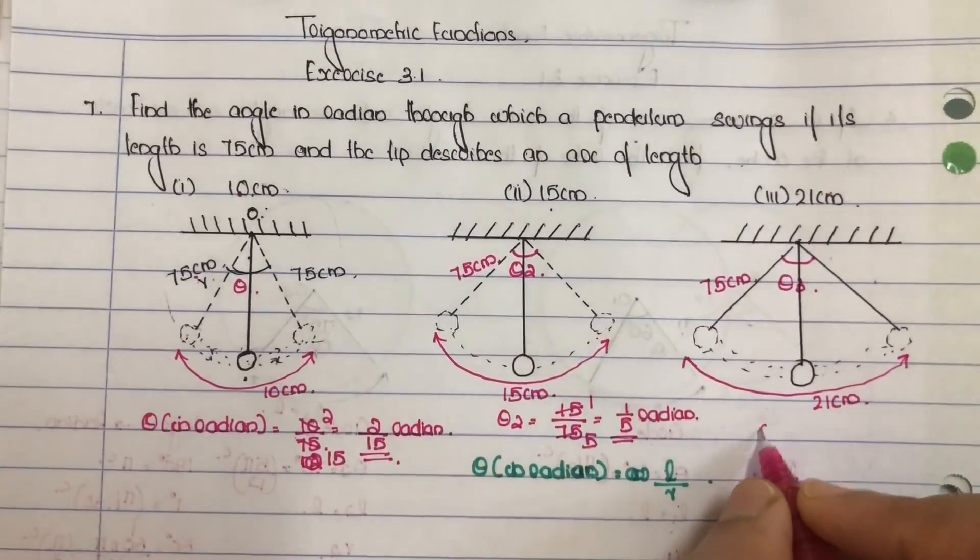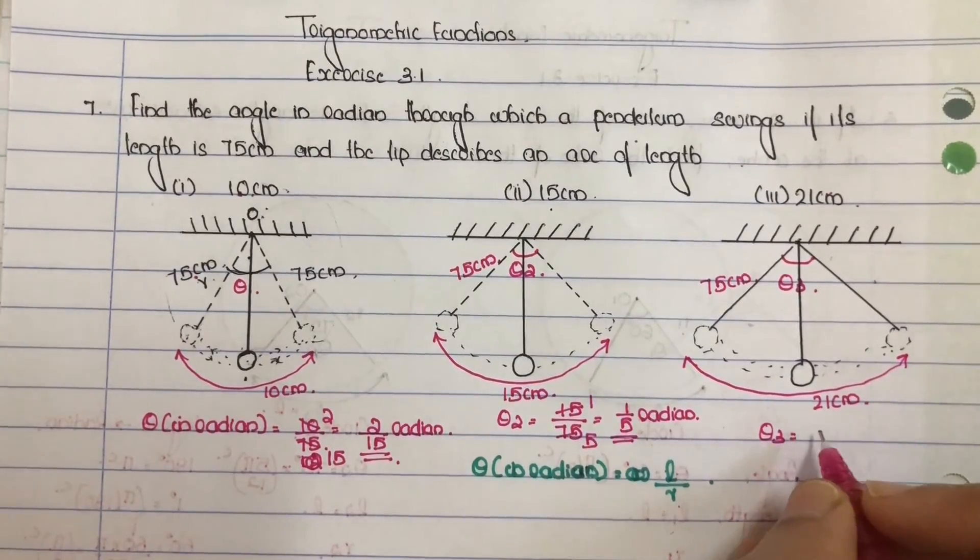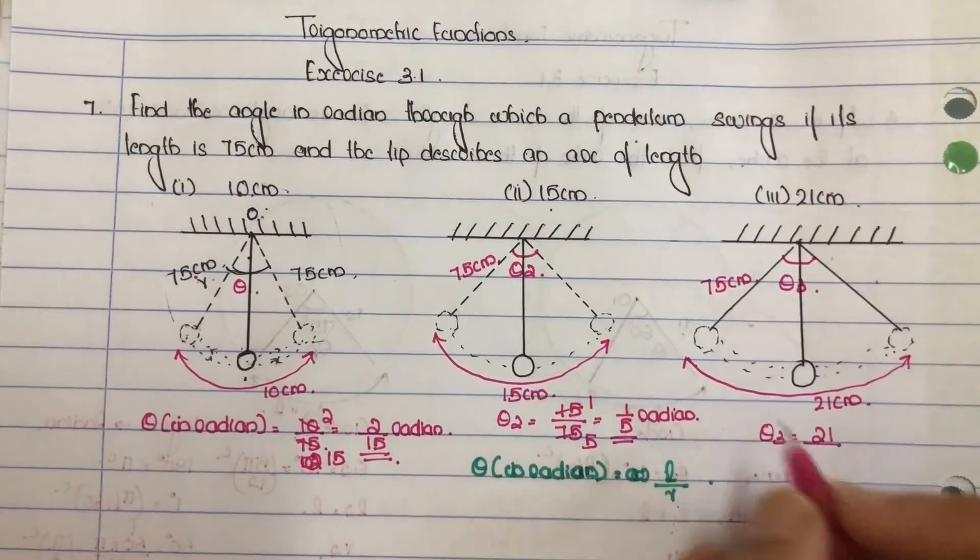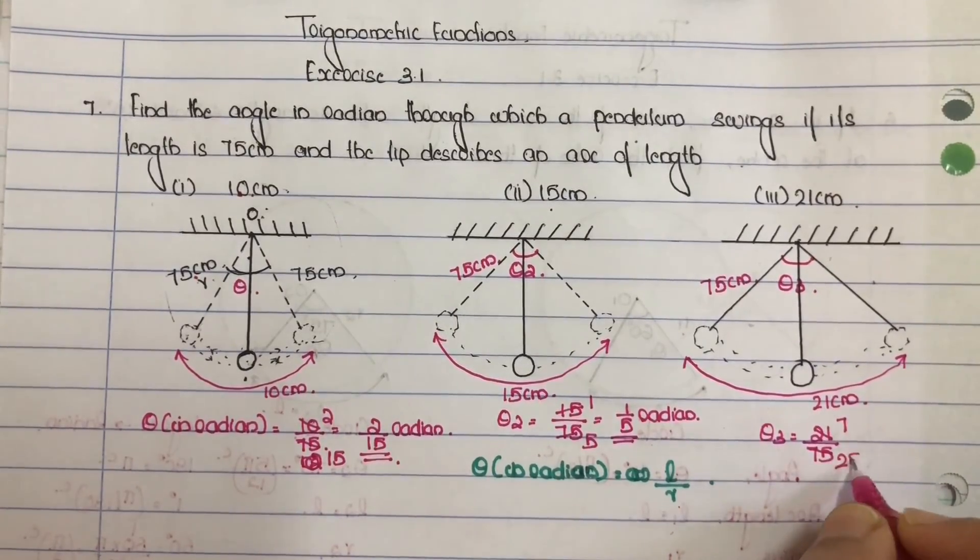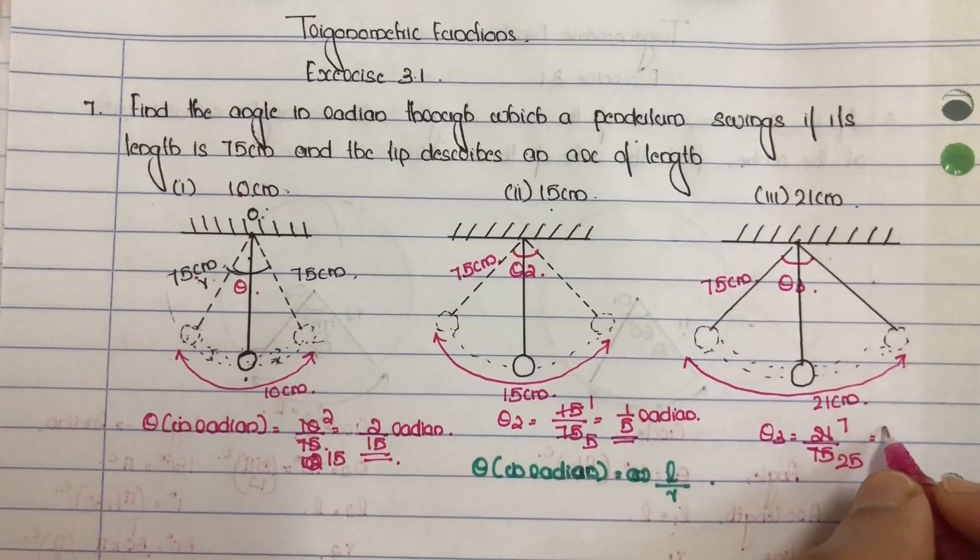So theta 3 is equal to L by R, L is 21, R is 75, equal to 7 by 25 radian.